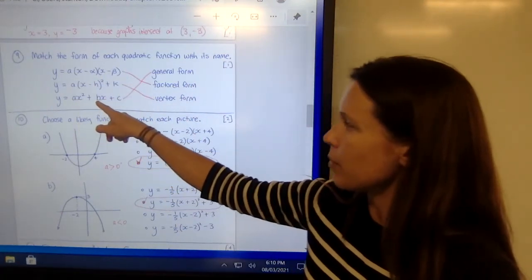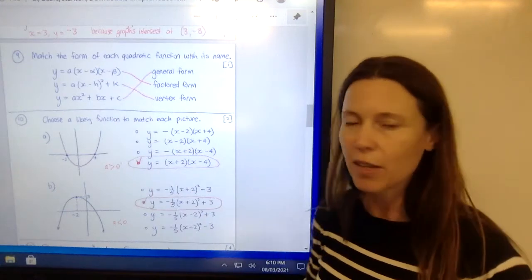The general form, ax squared plus bx plus c, the a, b and c are just numbers, they're constants.